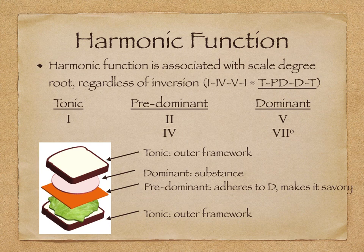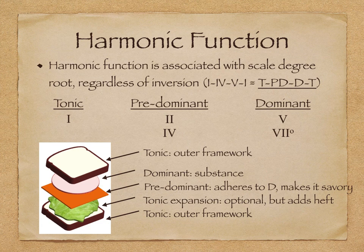Finally, we can think of tonic expansion as more optional toppings, which also add heft to our sandwich. So viewing the sandwich from the bottom up, a typical cycle of harmonic function will go: tonic, optional tonic expansion, optional predominant, dominant, and then tonic.